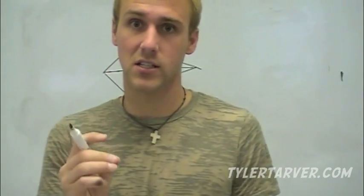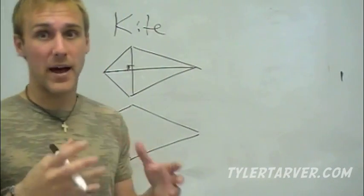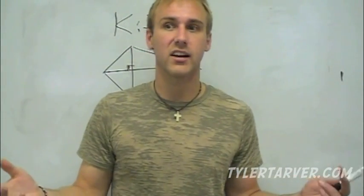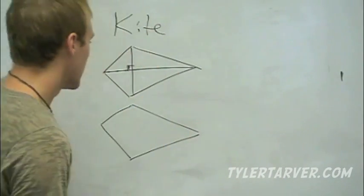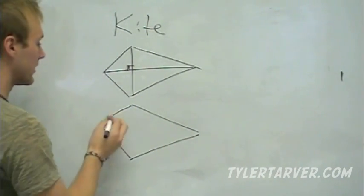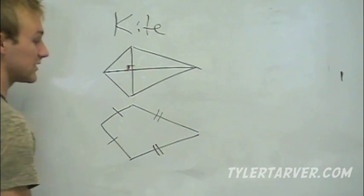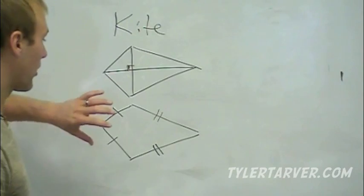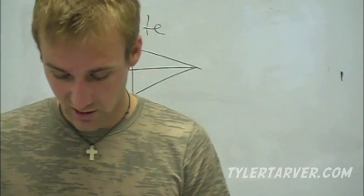The thing that sets kites apart is that it has two pairs of consecutive congruent sides. Consecutive means back to back or side by side — like consecutive home runs means back-to-back home runs. So two pairs of consecutive congruent sides: this side is congruent to this side, and this side is congruent to this side. Those are the two main things about kites.